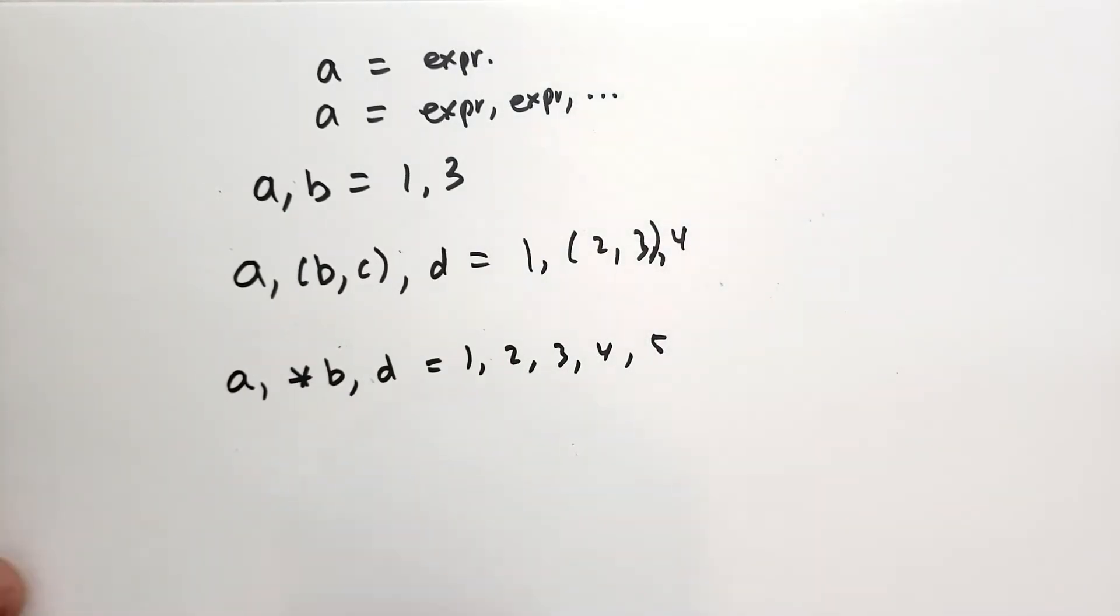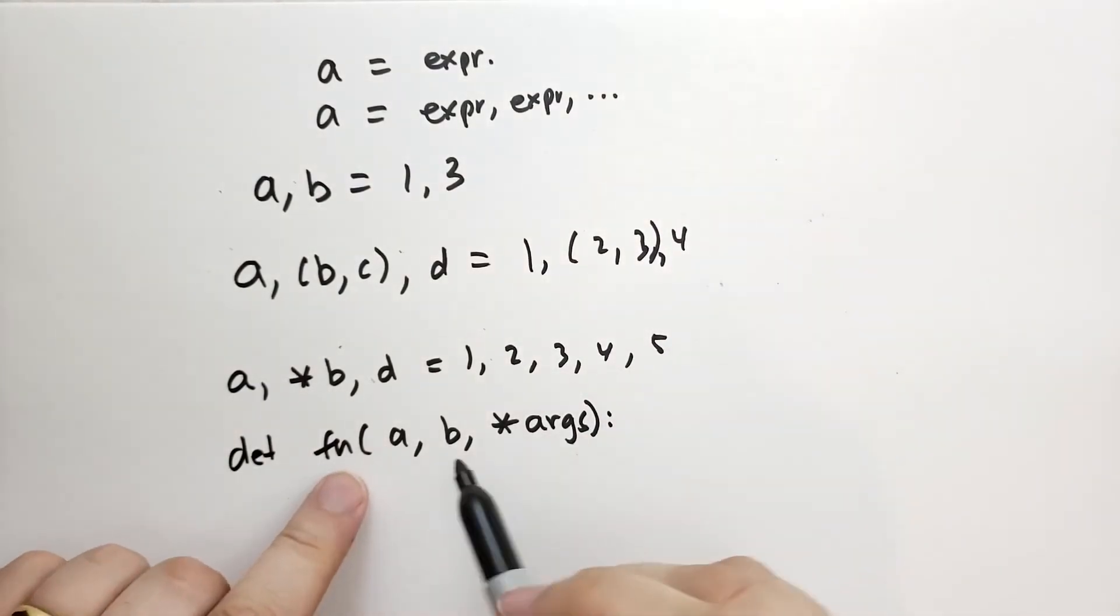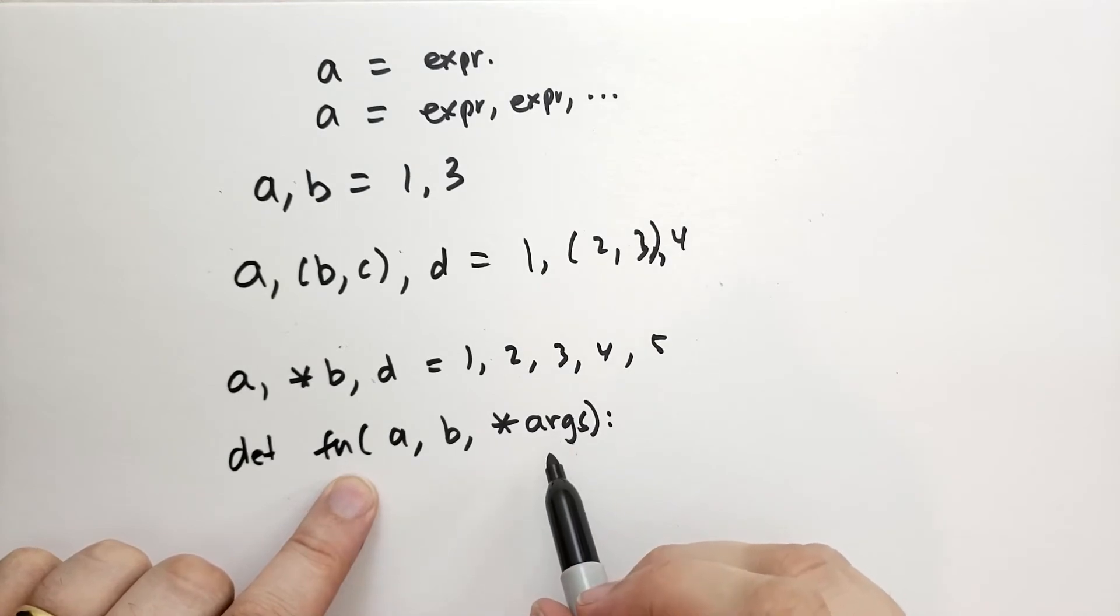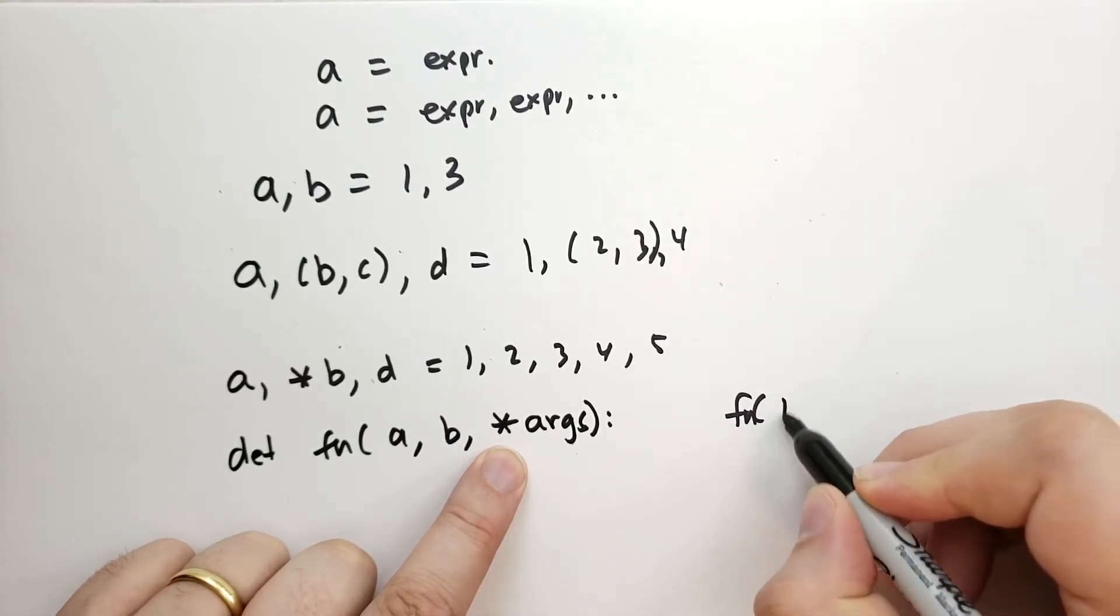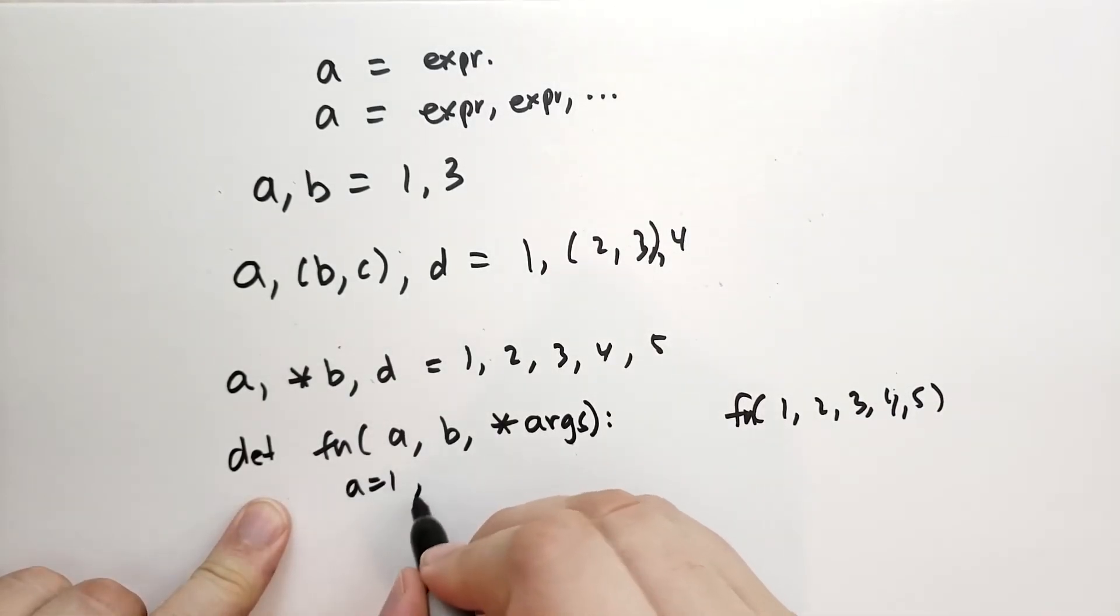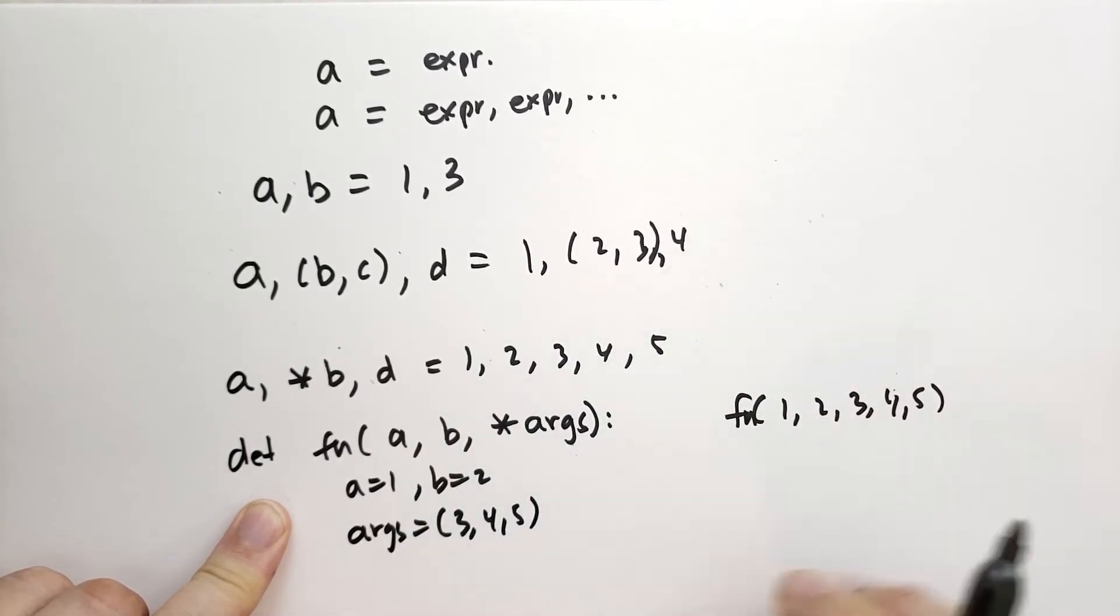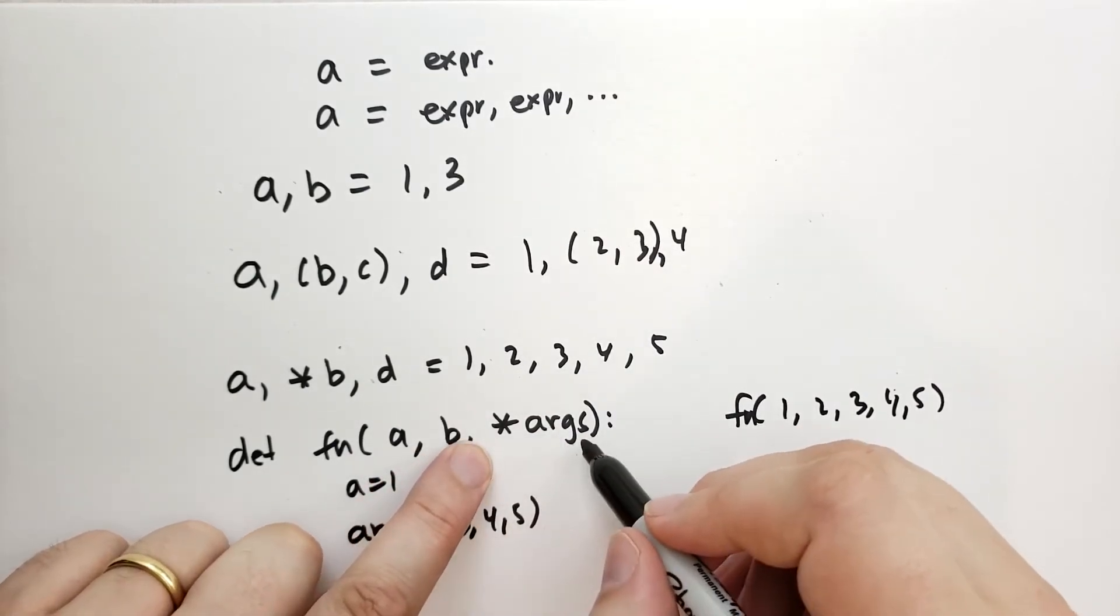And finally, one little note is when you define a function. So we can say def function(a, b, *args). And what this will do is allow the function to take as many arguments as you want. a and b will pick up the first two arguments, but *args will pick up the rest. So if I were to call this with 1, 2, 3, 4, 5, then a would be 1, b would be 2, and then args would be the tuple 3, 4, and 5.